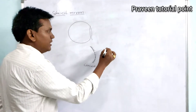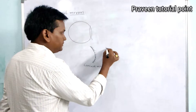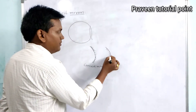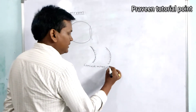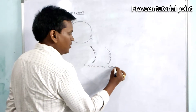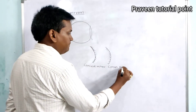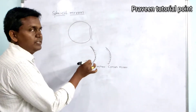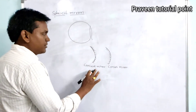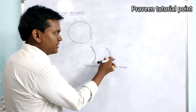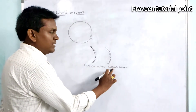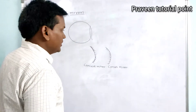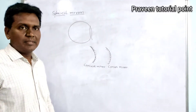In the same way, if the concave surface is silver coated, then this mirror is called a convex mirror. That means, if the reflecting surface is concave, it is called a concave mirror, and if the reflecting surface is convex, it is called a convex mirror. These are the two different types of spherical mirrors.